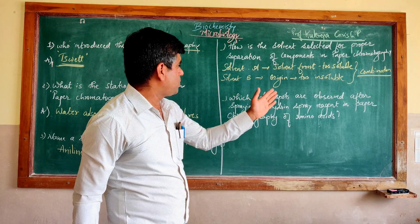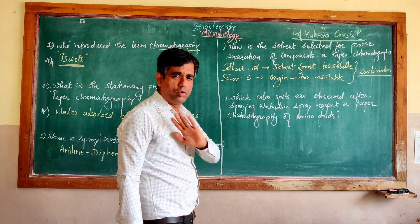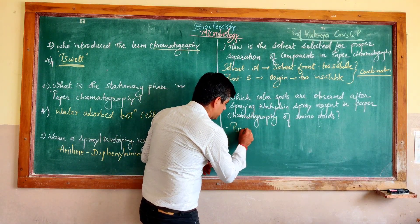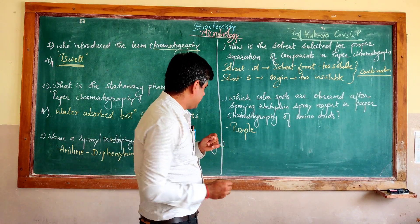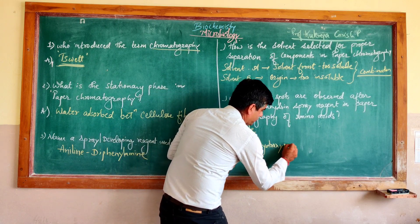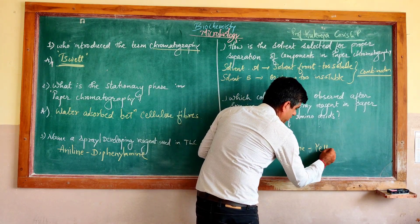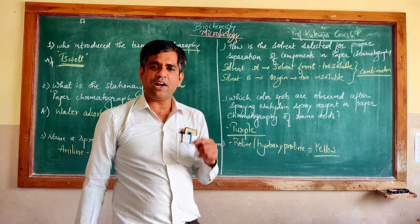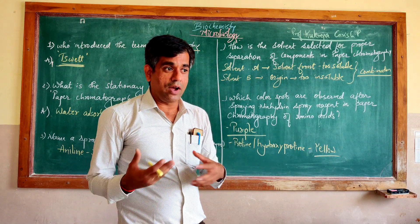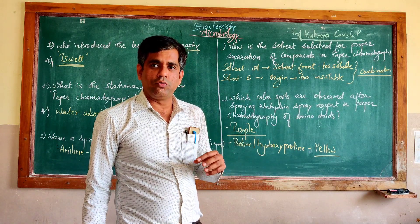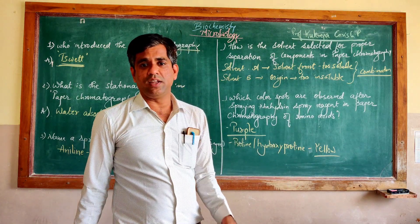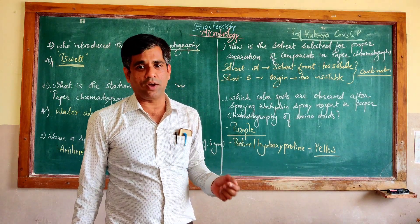The last question: which colored spots are observed after spraying with ninhydrin spray reagent? It is one of the most common reagents used for chromatography of amino acids. Most amino acids give purple colored spots, whereas proline and hydroxyproline give yellow colored spots. For quantification in biochemical tests, you can measure absorbance: purple at 570 nm and yellow at around 450 nm. Stay tuned for more on microbiology and biochemistry. Thank you.